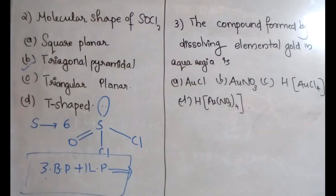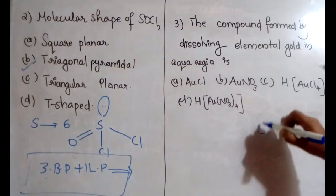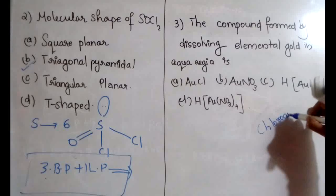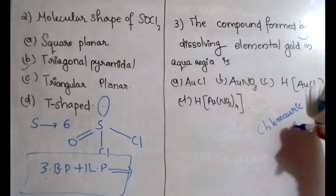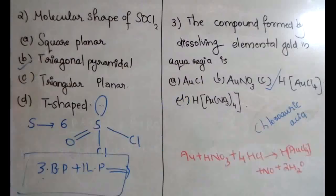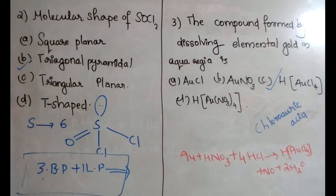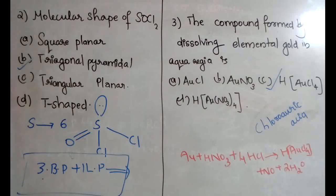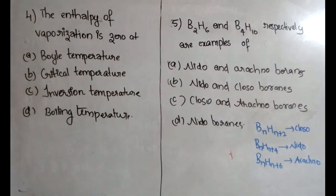The third question: the compound formed by dissolving elemental gold in aqua regia is chloroauric acid (HAuCl₄), and option C is the correct answer. The reaction is: Au + HNO₃ + 4HCl → HAuCl₄ + NO + 2H₂O.